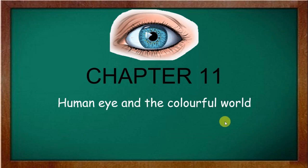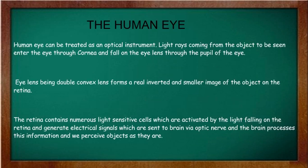What is a Human Eye? The Human Eye is an organ through which you can see different objects. It is treated as an optical instrument which allows you to see different objects in front of you.